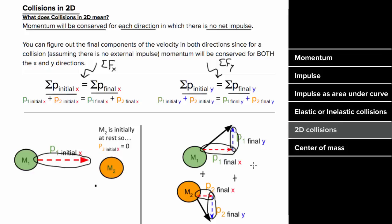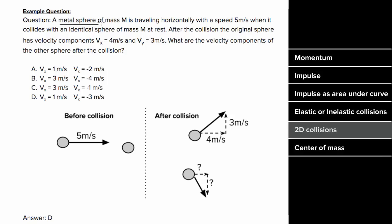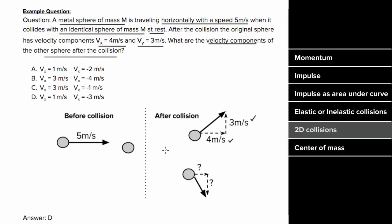Let's say a metal sphere of mass m is traveling horizontally with 5 meters per second when it collides with an identical sphere of mass m that was at rest. After the collision, the original sphere has velocity components of 4 meters per second and 3 meters per second in the x and y directions. We want to know the velocity components of the other sphere right after the collision. Since there are no net forces in the x or y direction, momentum is conserved for each direction, and since the masses are equal, we can simply look at the velocity components.